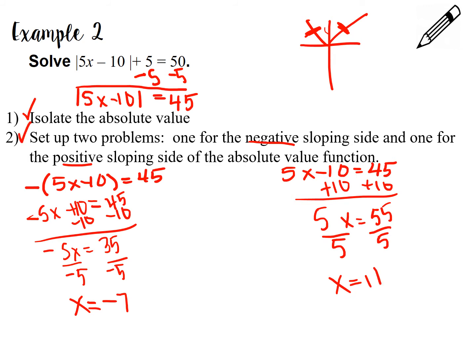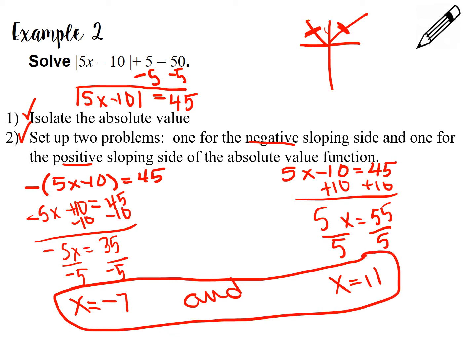When we're done solving these two, we need to think: do these solutions make sense? Sometimes people get confused because they think absolute value can't be negative — but we're not talking about what the absolute value outputs. We're talking about what numbers work when we plug in for x. If we plug in negative 7: 5 times negative 7 is negative 35, minus 10 is negative 45, and the absolute value of that is 45, plus 5 is 50. So a negative answer for x is not necessarily wrong. We always find two solutions with absolute value because we have two parts of our V.